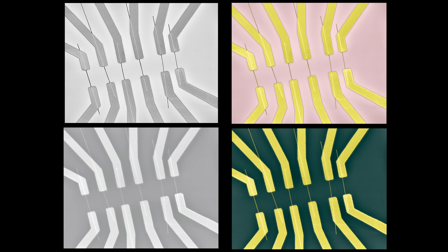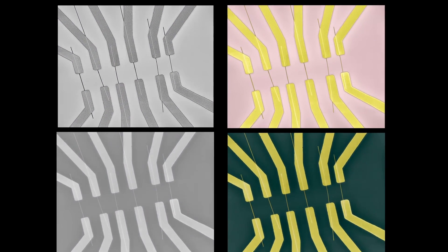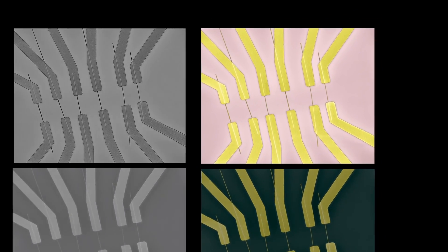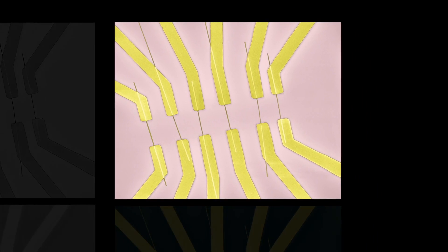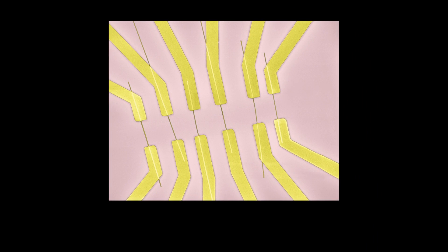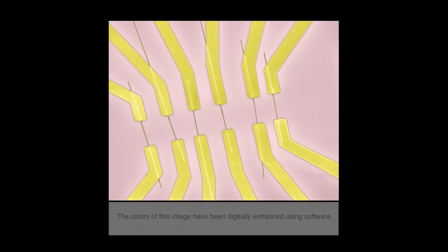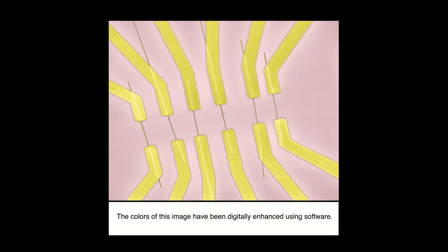But first and foremost, with any work in science, whenever we color any SEM or other image, we must always indicate what we have done. Period. Somewhere near the image, not on another page we have to dig deeply to find, somewhere near the image, we must say, this image was color enhanced.